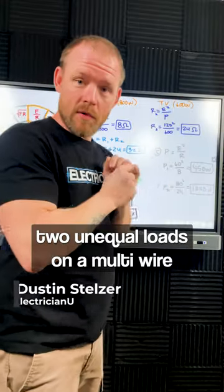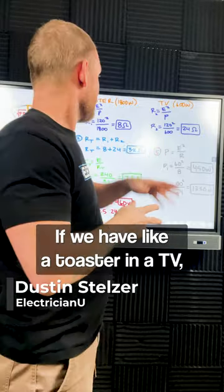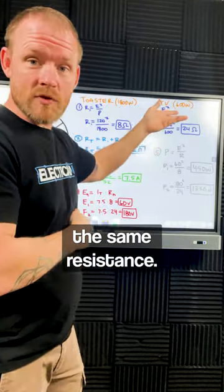When we have two unequal loads on a multi-wire branch circuit and we lose the neutral, this is a really dangerous thing. If we have a toaster and a TV, they're not going to have the same resistance.